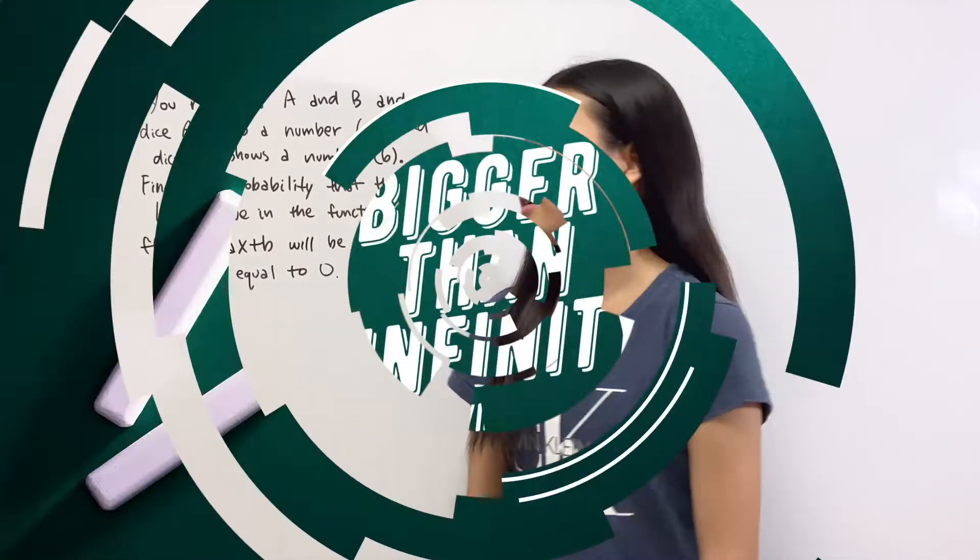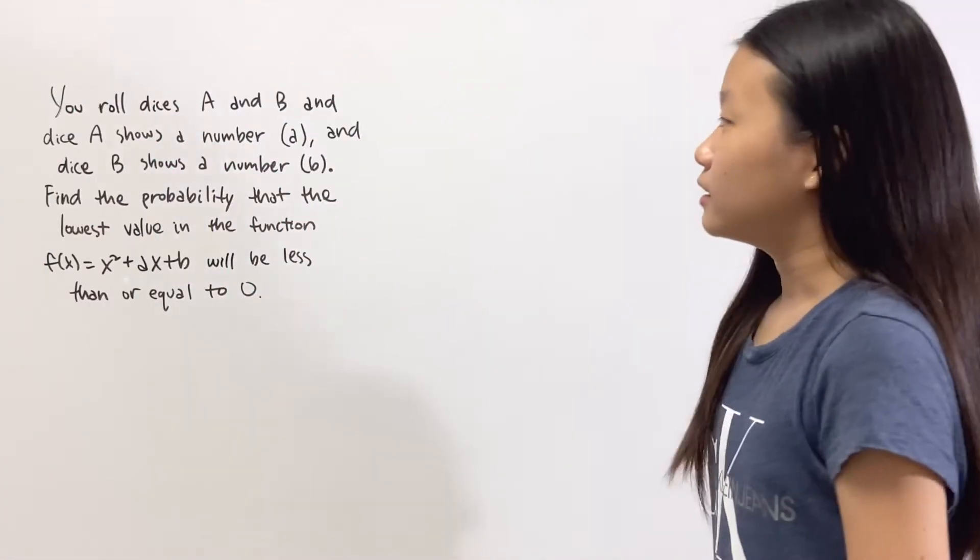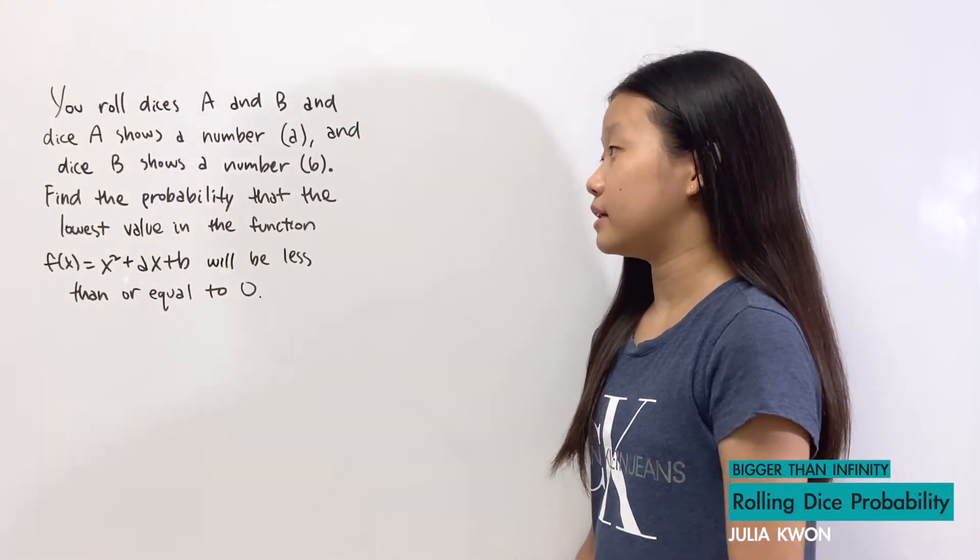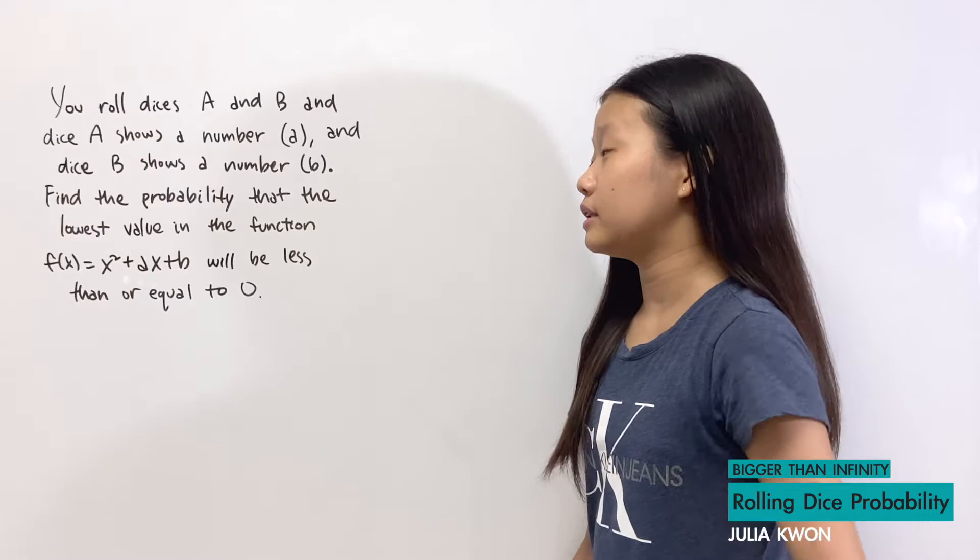The problem says you roll dice A and B, and dice A shows a number that we'll call a, and dice B shows a number that we'll call b.